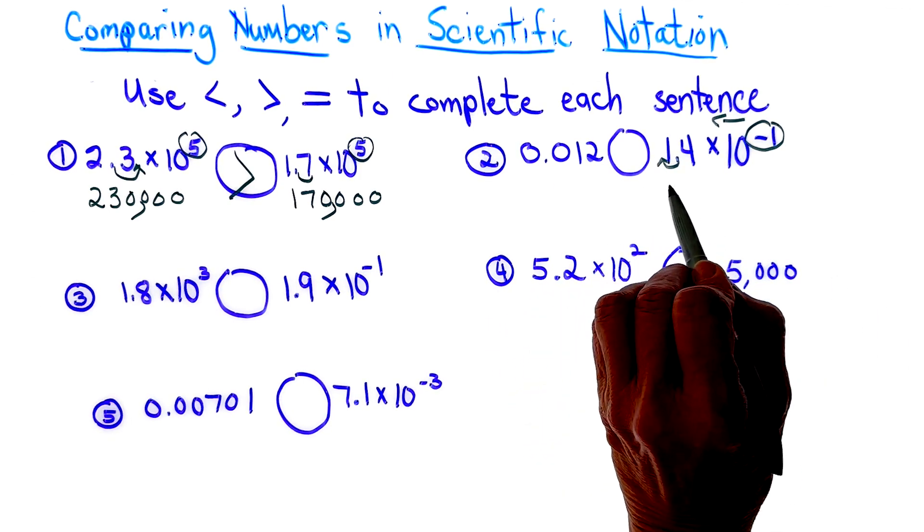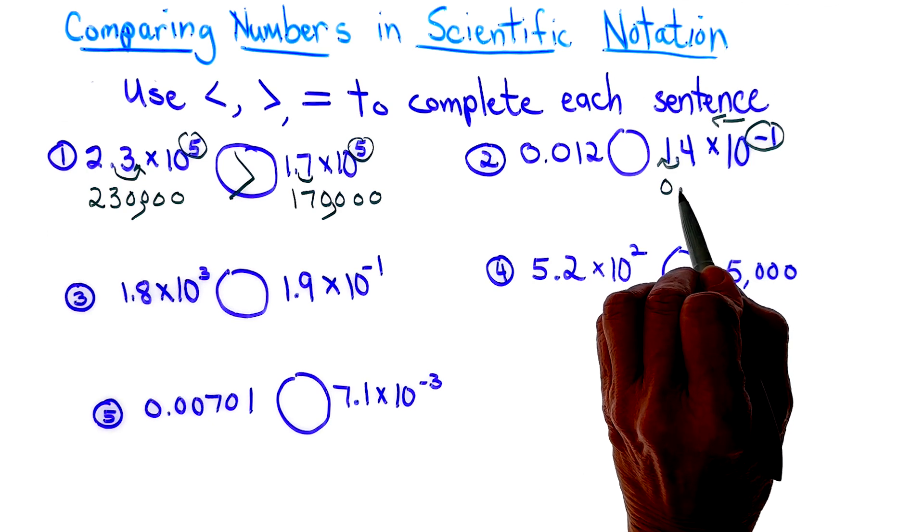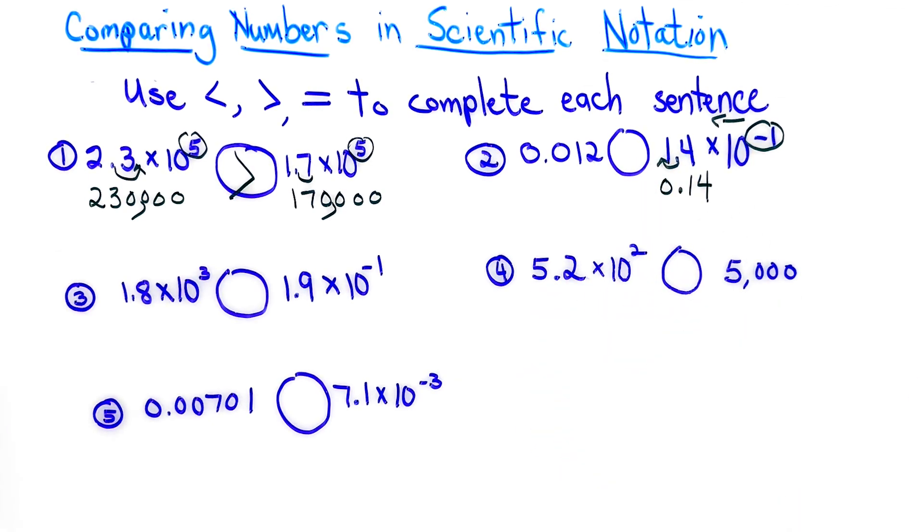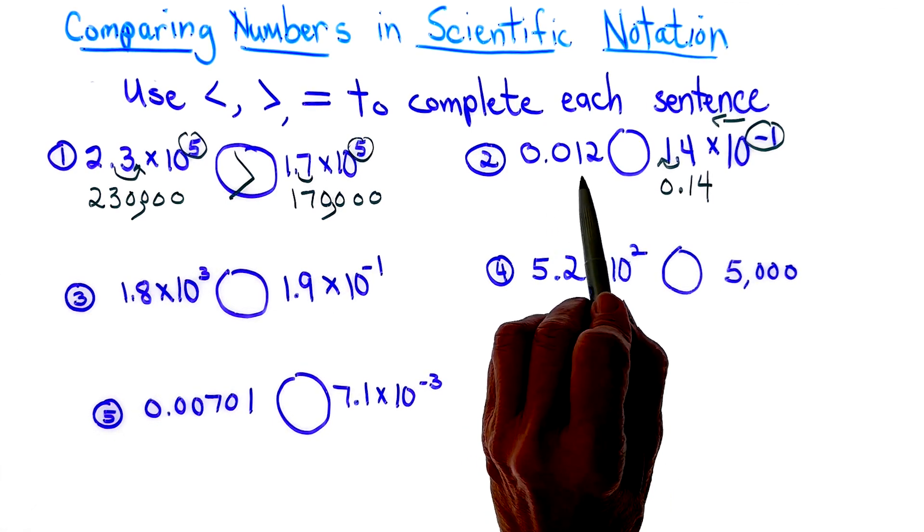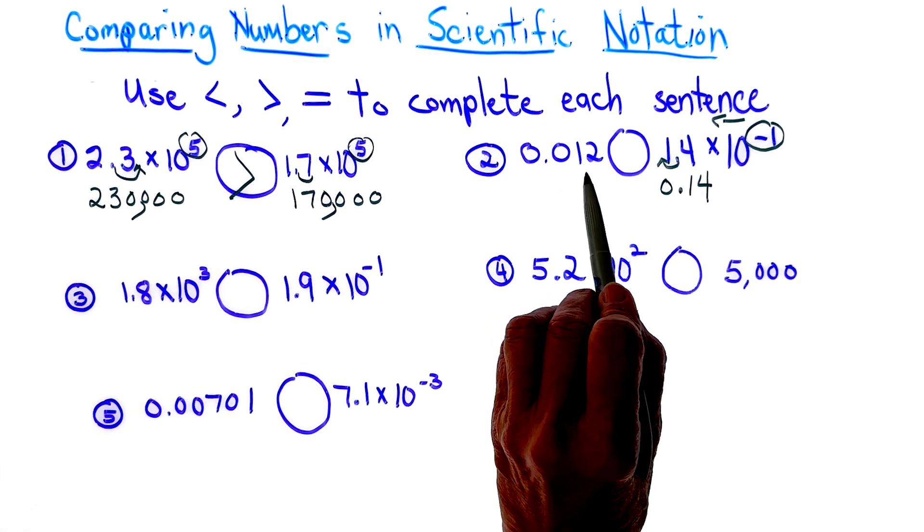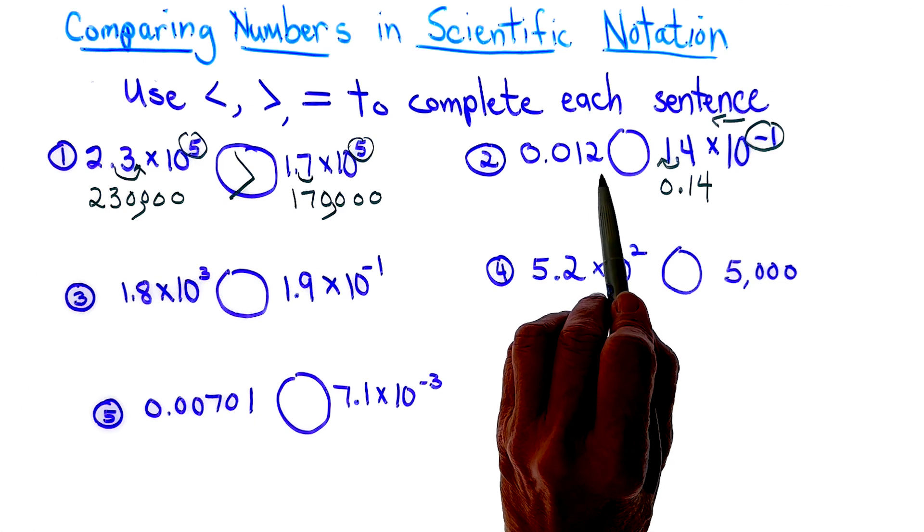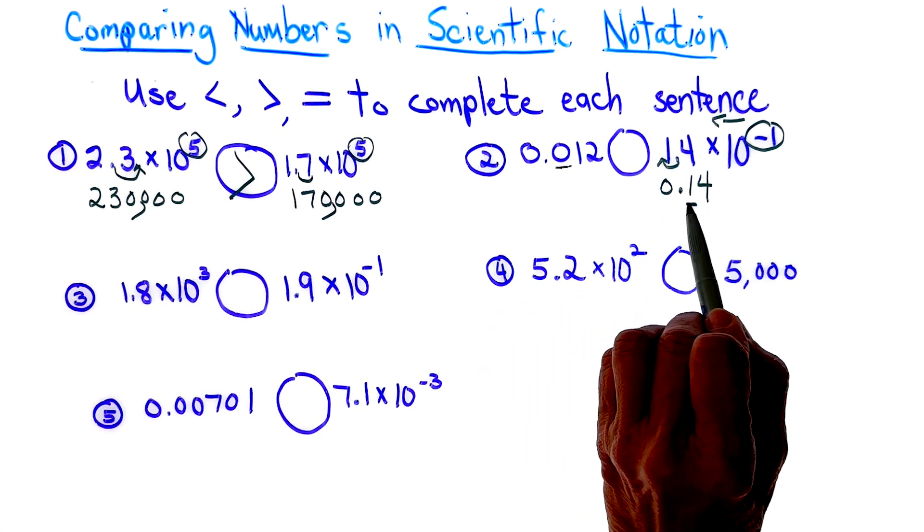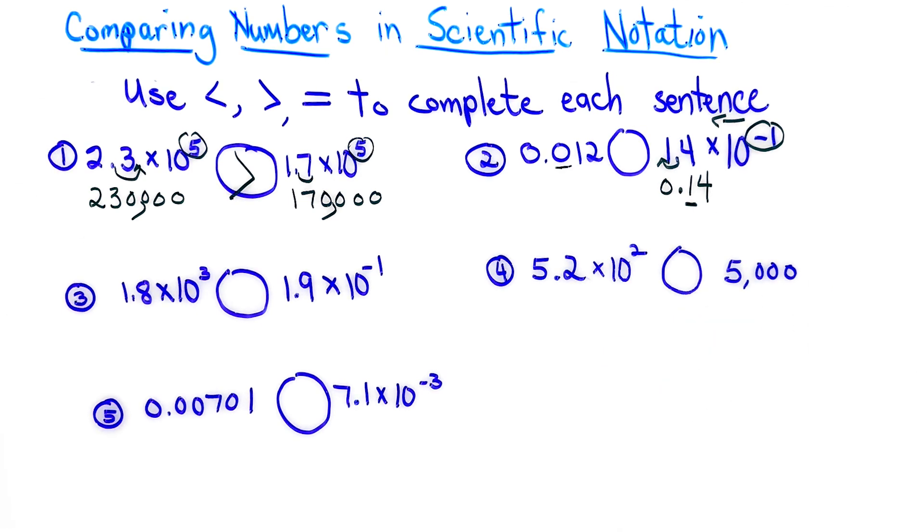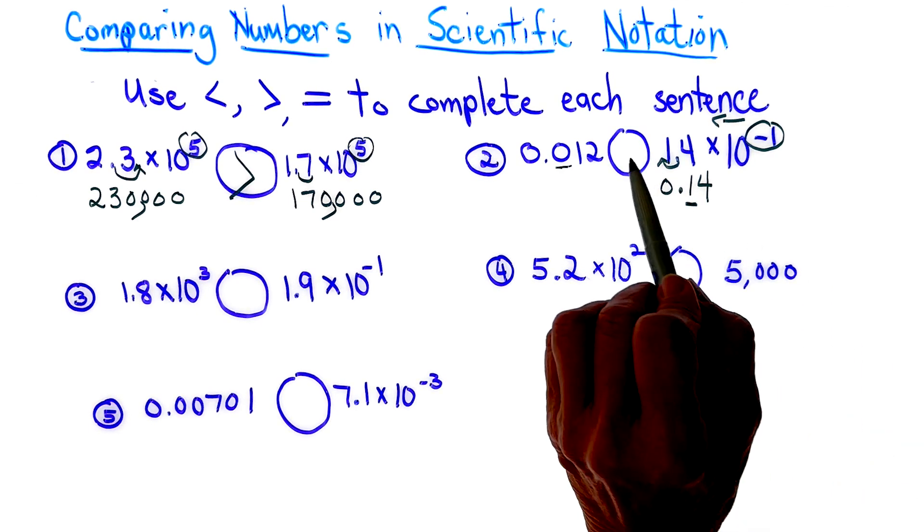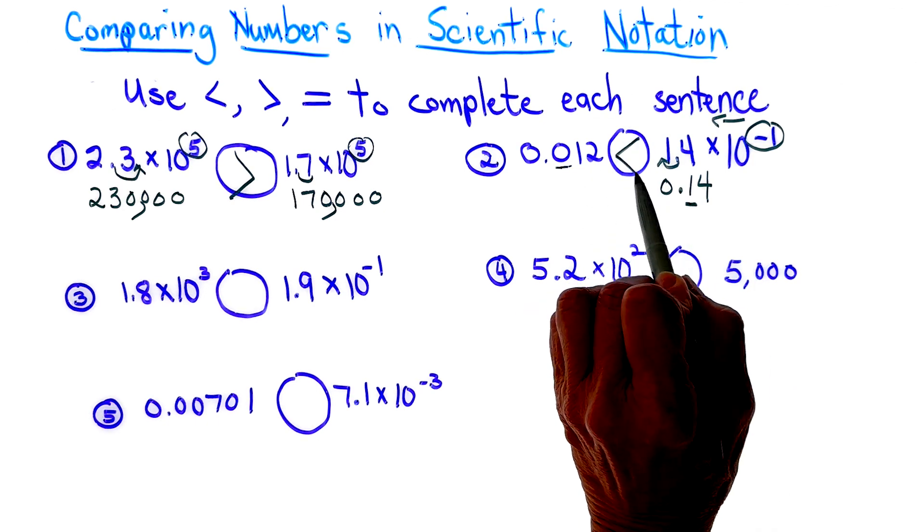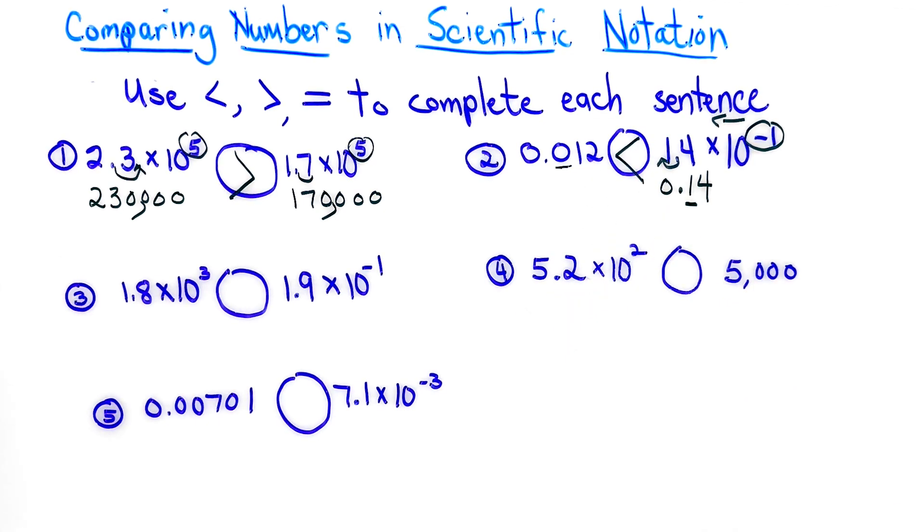So when I'm looking at this, I see that I have no whole numbers, but I have 14 hundredths. And our first number is actually 12 thousandths. So I can just go ahead and compare my tenths place, and I can see that definitely a 1 is greater than a 0. So I will use that less than symbol.